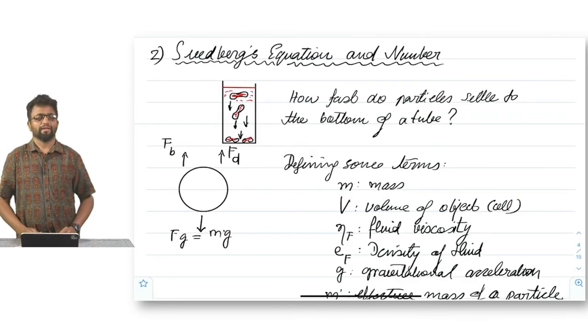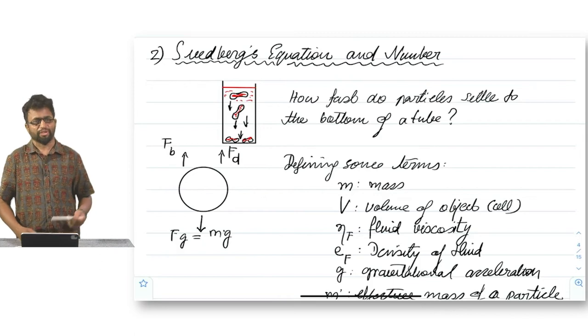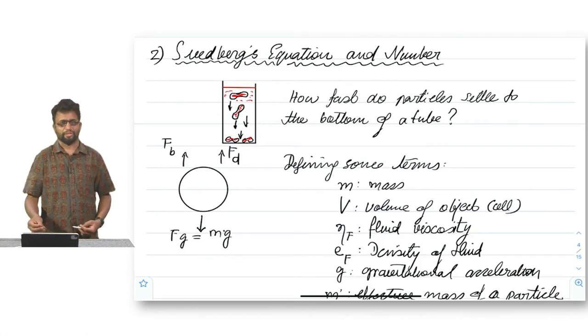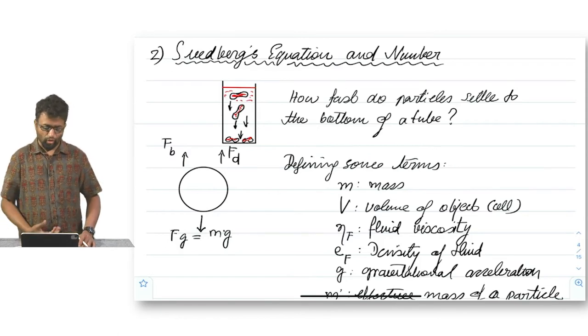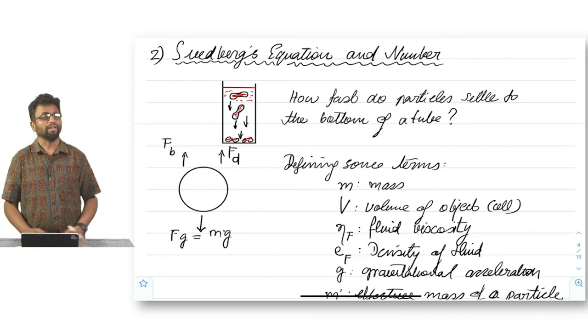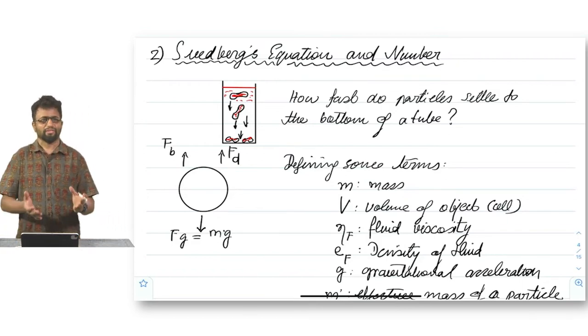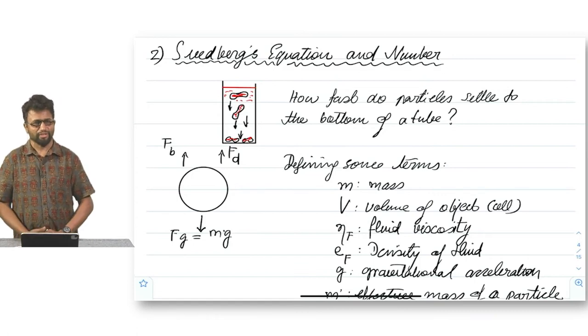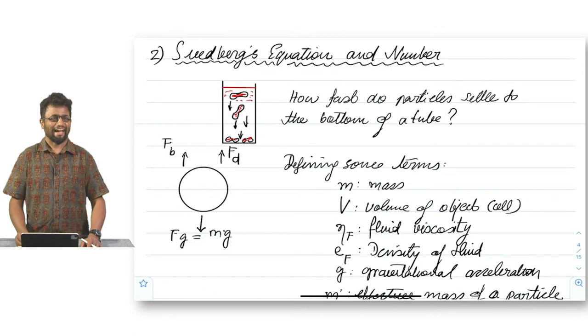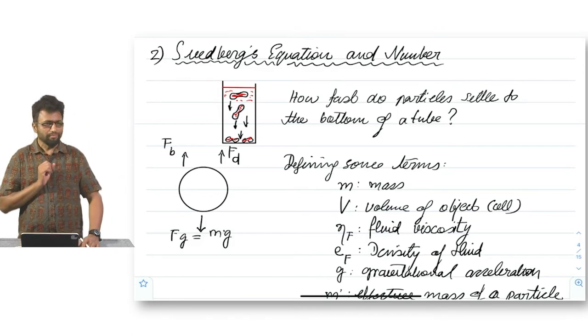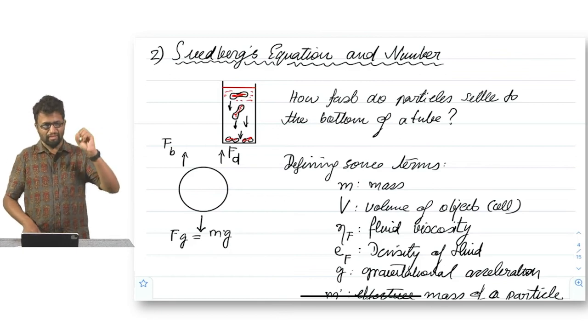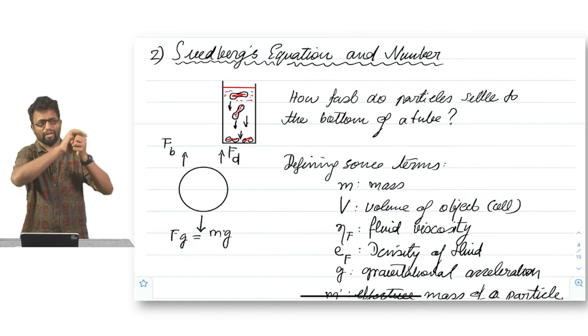One of the important measures of sedimentation and centrifugation is Svedberg's number and the equation that describes this process is Svedberg's equation. The question that Svedberg asked was how fast do particles settle to the bottom of a tube and what determines it? It's a very simple question. I hope I will make a little bit more sense than the textbook. We need to define some terms.